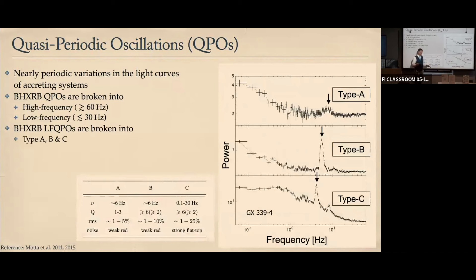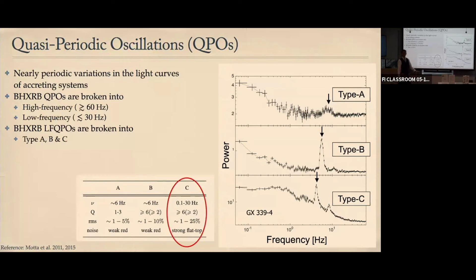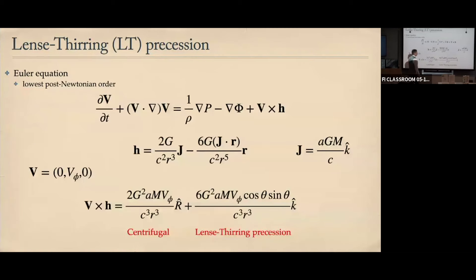The low-frequency QPOs are further divided into Type A, B, and C. I'm going to be focusing only on what's called the Type-C QPO. What I'm going to argue is that the Type-C QPO is well explained by something called Lense-Thirring precession.